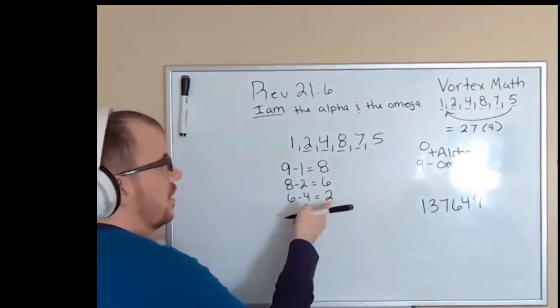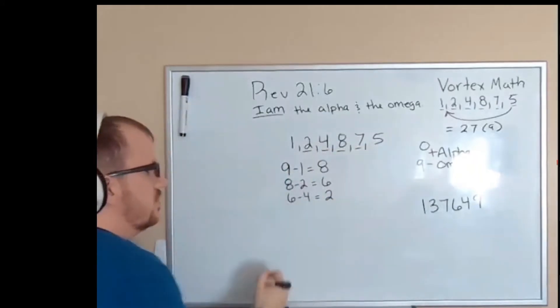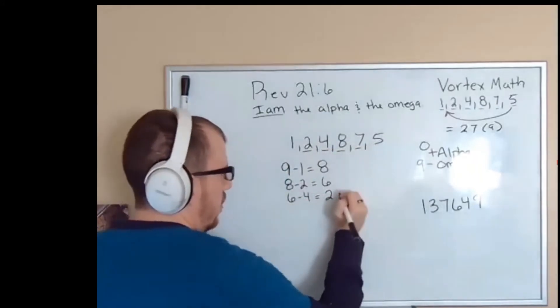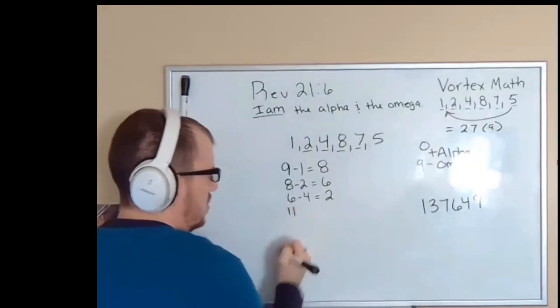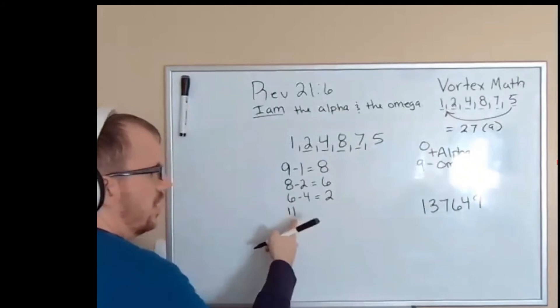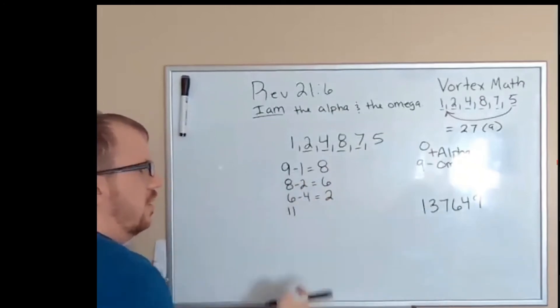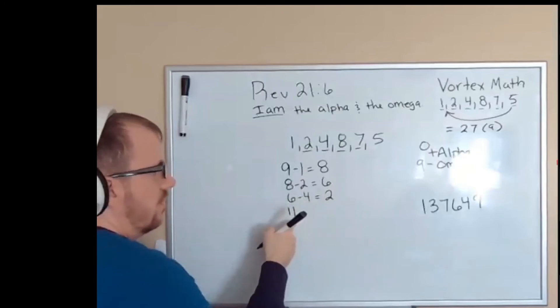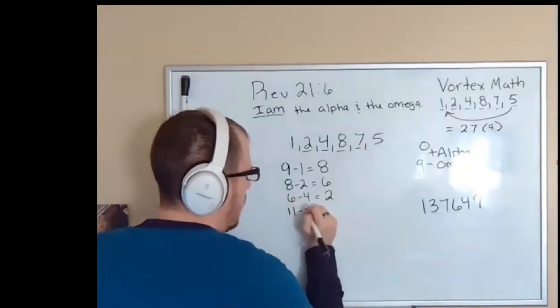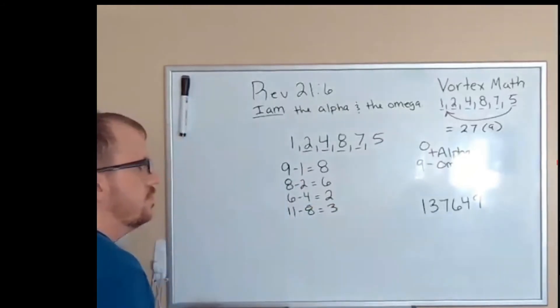But two can actually be taken away from eight. So what we're going to do is reverse the two. We're going to turn it into 11 so that way we have a positive number. Before, if we were dealing with an 11, we'd reduce it down to a two using Pythagoras. We're going to do the opposite. Now we're going to take two and turn it into 11. Eleven minus eight is going to be three.